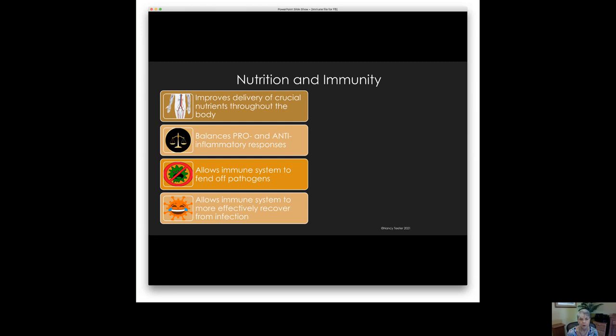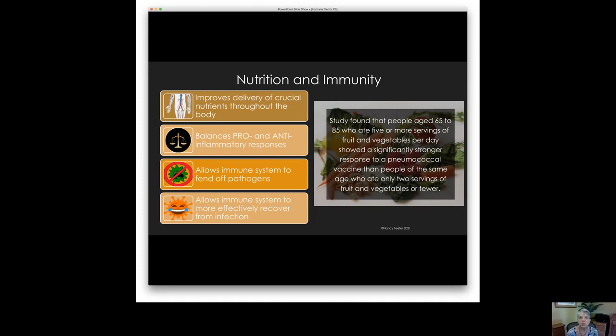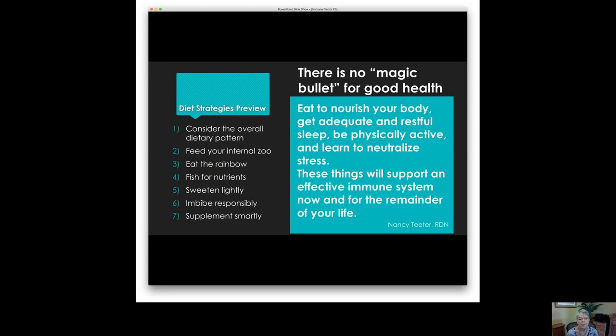So once we're done with an infection, we have fewer chances of long-term impact and we're more resilient, bouncing back quicker. There was one study that found that people aged 65 to 85 who ate five servings of fruits and vegetables a day showed a significantly stronger response to a pneumococcal vaccine than people who ate two or fewer servings. So it doesn't take a lot of healthy food to change the immune response.